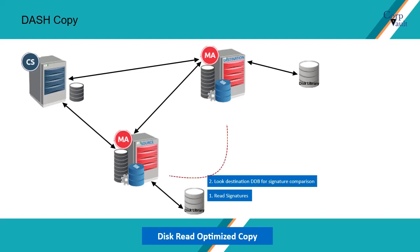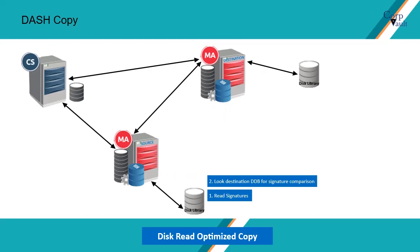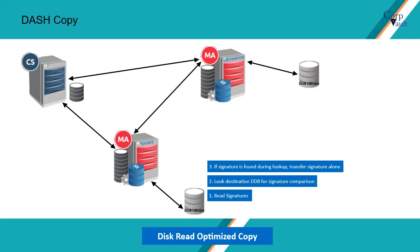These signatures are compared to the existing signatures on the DDB — that is, the deduplication database — located on the destination remote media agent, let's say a media agent on a remote location. Based on the comparison, one of the following operations is performed. If the signature is present on the destination DDB, then the data blocks are already available on the destination media agent, and only signature references are transmitted to update the destination DDB.